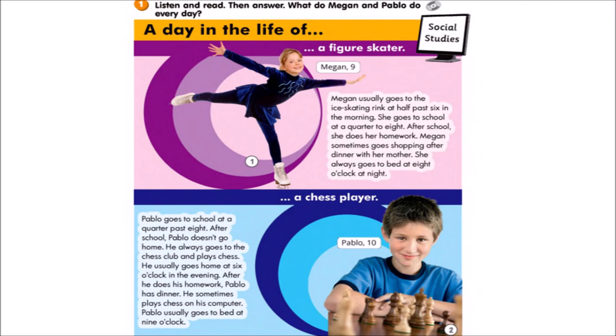A chess player. Pablo, age ten. Pablo goes to school at a quarter past eight. After school, Pablo doesn't go home. He always goes to the chess club and plays chess. He usually goes home at six o'clock in the evening. After he does his homework, Pablo has dinner. He sometimes plays chess on his computer.